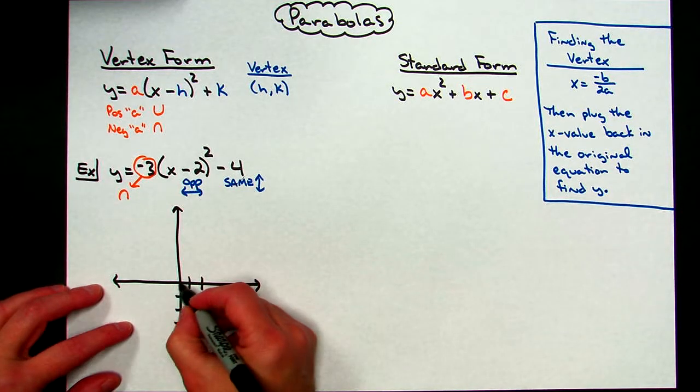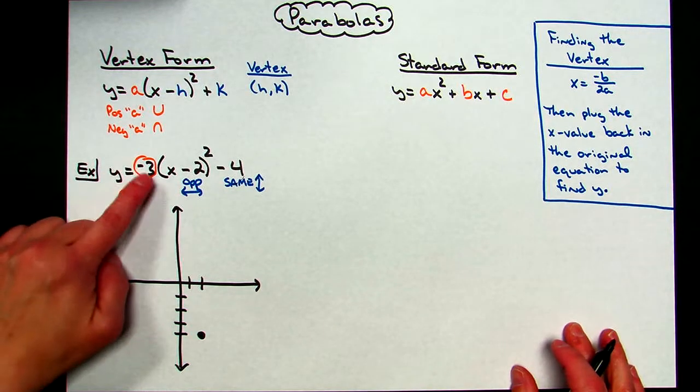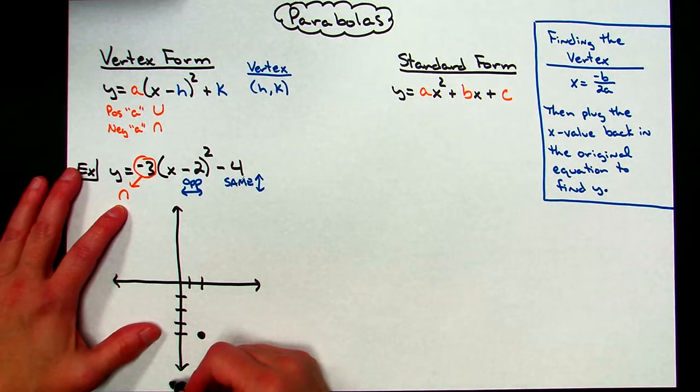So I shifted to the right 2, down 4. I know that is my vertex. And because of my leading coefficient of a negative 3 right there, I know it's going to be upside down.